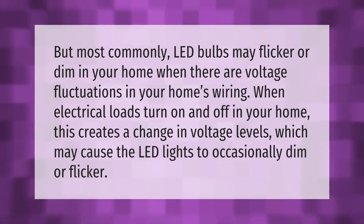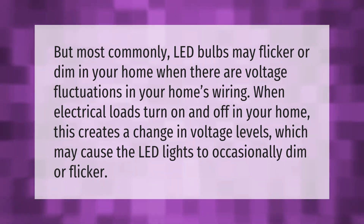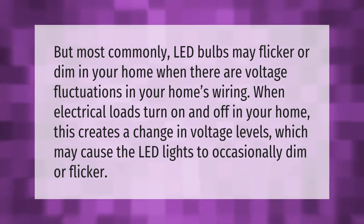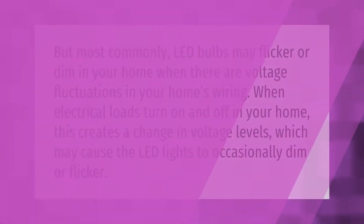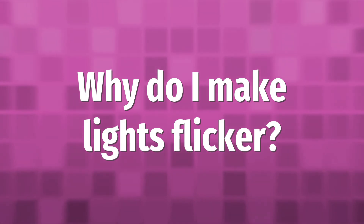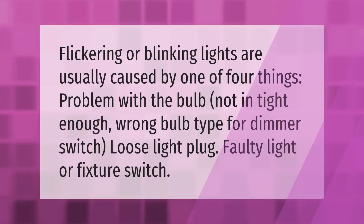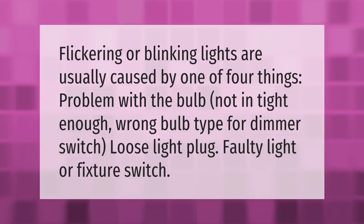Most commonly, LED bulbs may flicker or dim in your home when there are voltage fluctuations in your home's wiring. When electrical loads turn on and off, this creates a change in voltage levels which may cause the LED lights to occasionally dim or flicker.